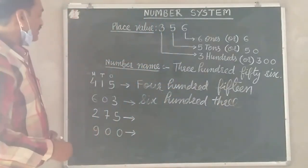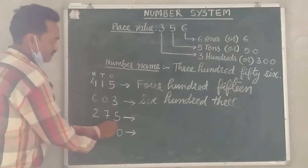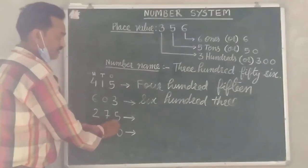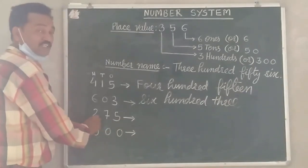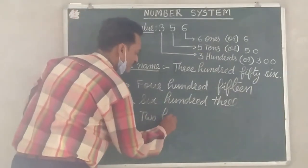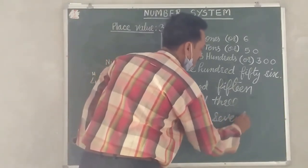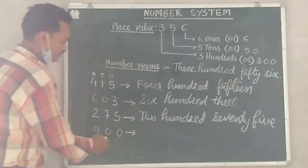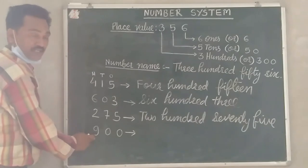This is the number 275. Now 5 ones, 7 tens, so 5 and 70, and 2 hundreds, 200. So 200, then 100, 200.